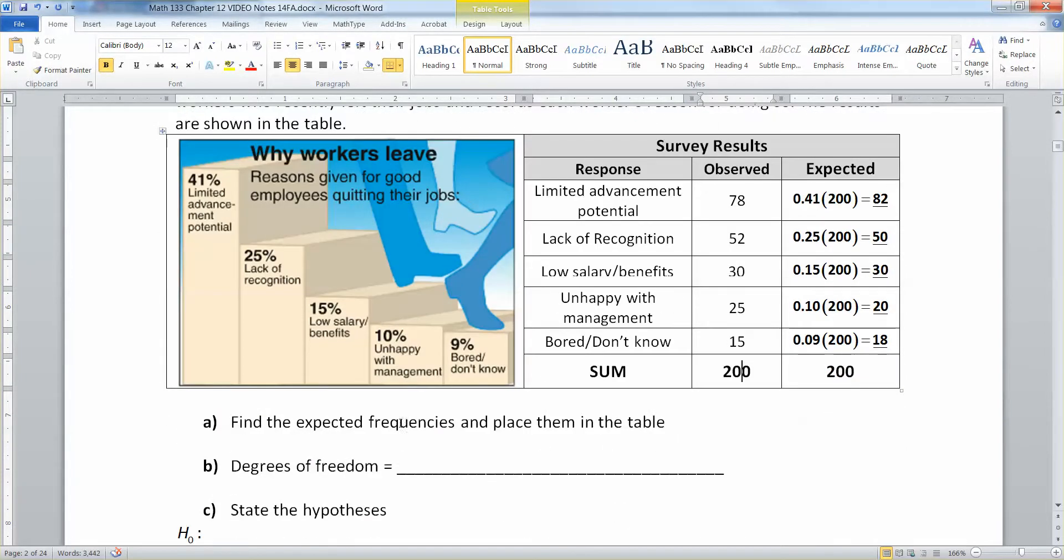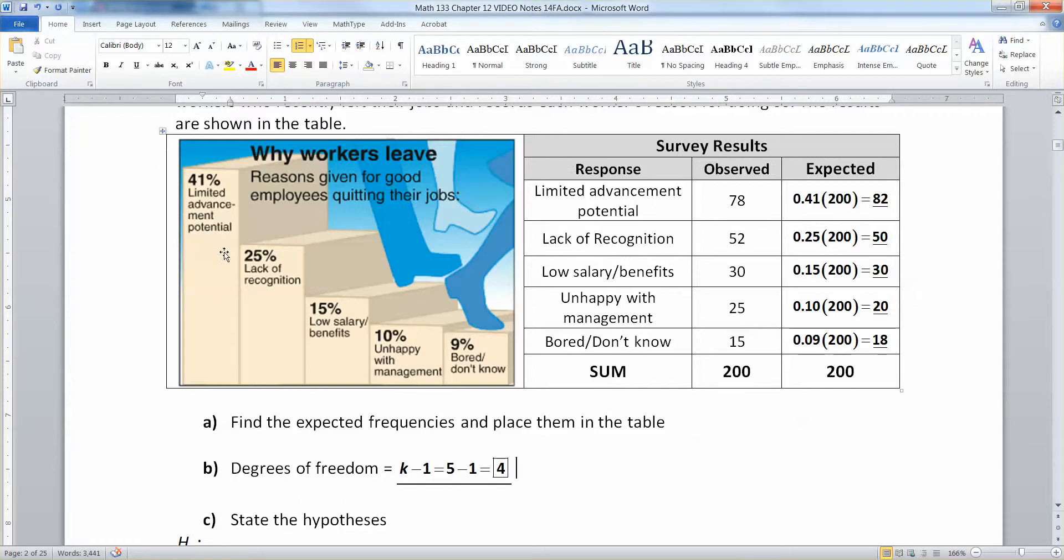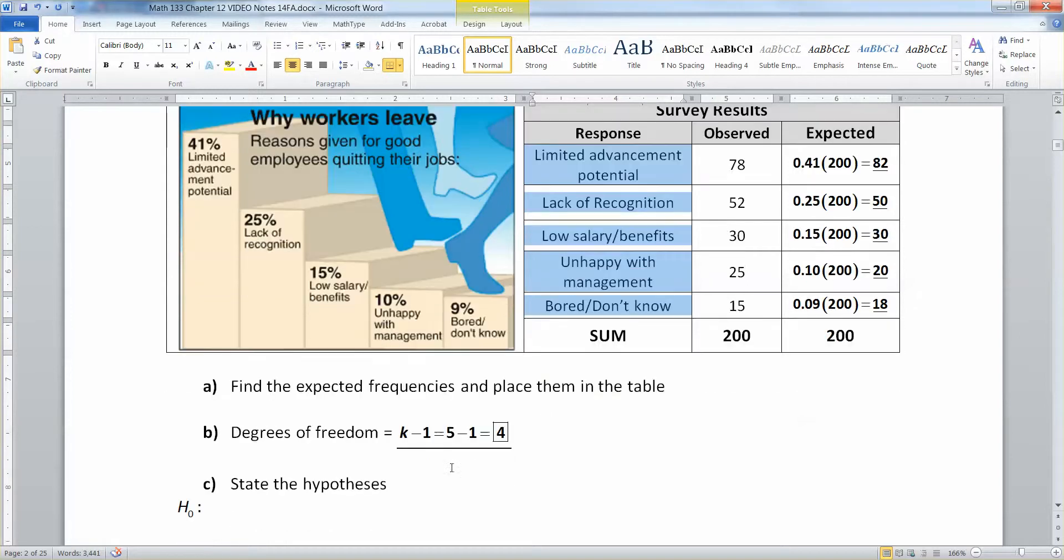So we found the expected frequencies and placed them in the table. As a quick reminder, how do we find the degrees of freedom? That's the number of categories minus one. So the number of categories is five. One, two, three, four, five categories. Five take away one would be four. So that's the degrees of freedom.